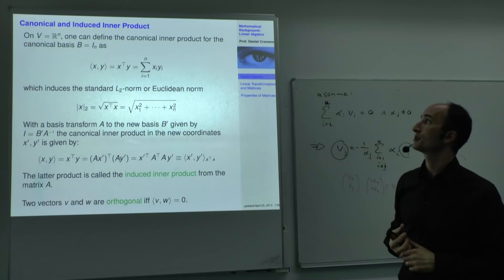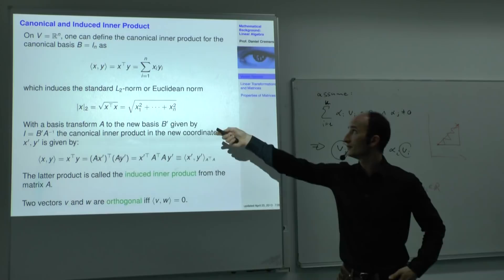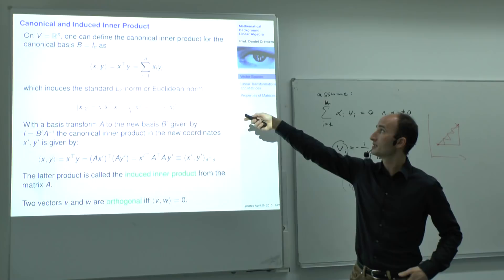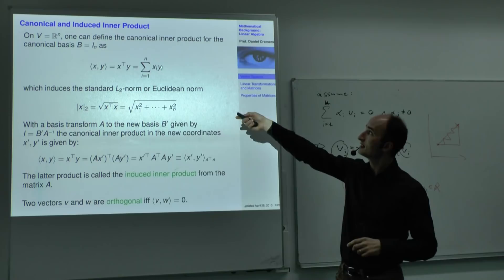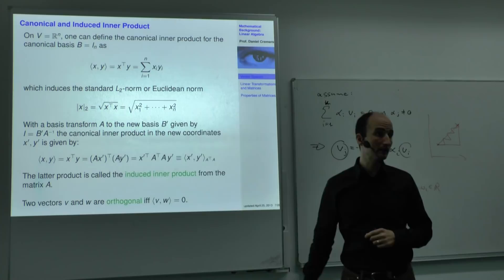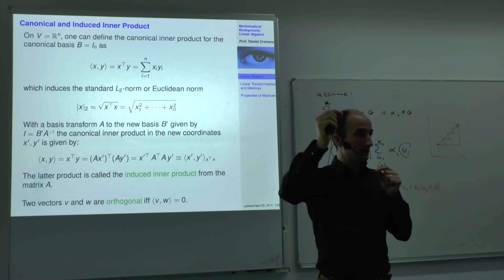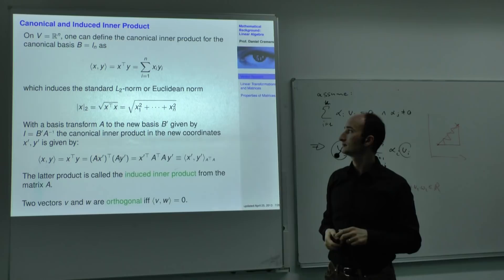For R^n, we can define the canonical inner product of two elements x and y as the sum over x_i * y_i. That is the canonical inner product for R^n, and the norm it induces is called the Euclidean norm — exactly the length of the connecting line between two points.